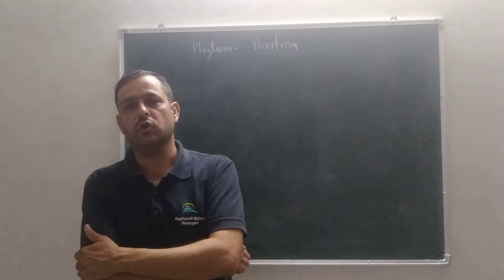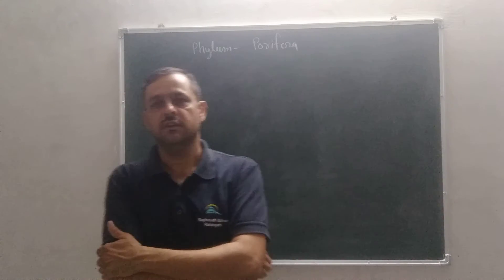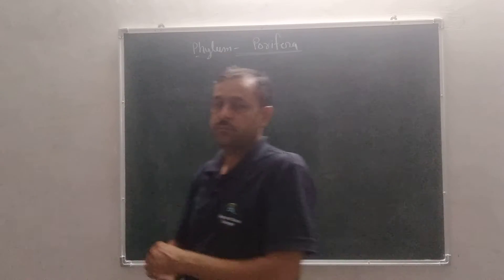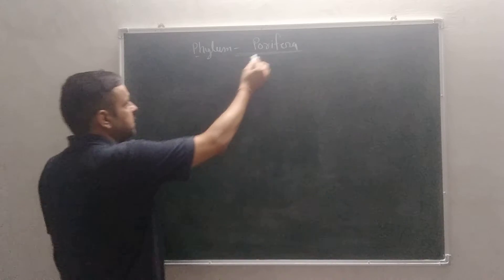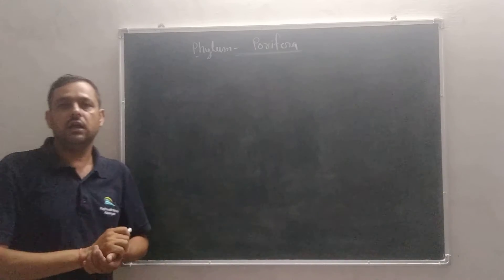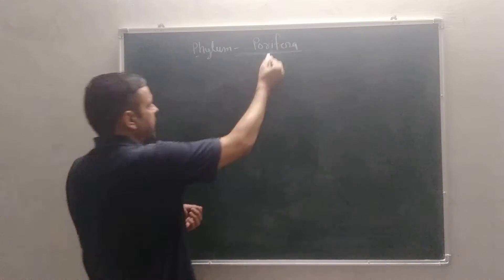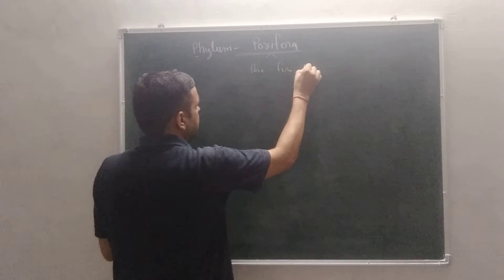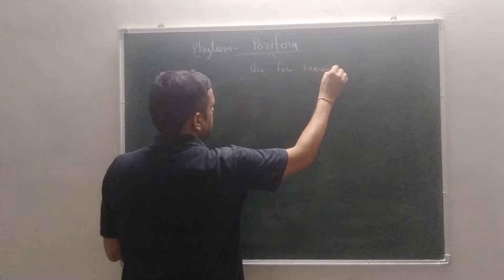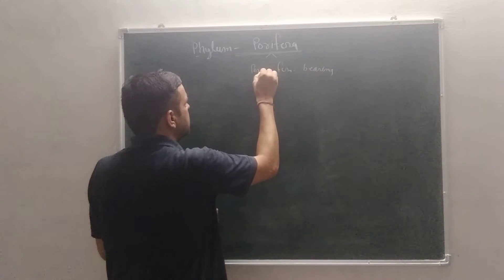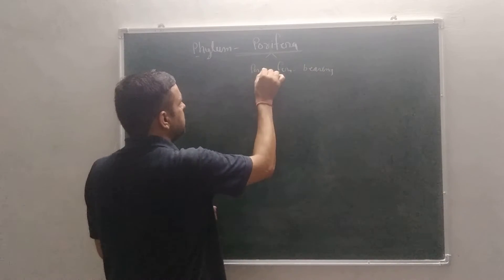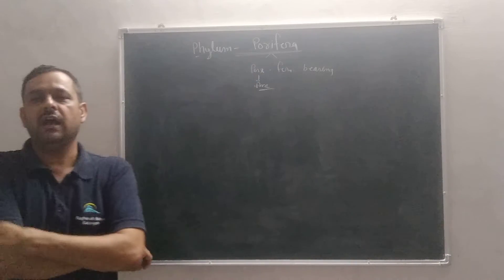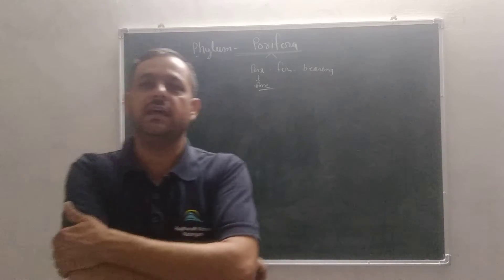Now, Non-Chordata are divided into nine phylum. The first phylum which we have studied today is Phylum Porifera. Porifera is a Greek word. When we want to understand this word, we can divide it into two parts: Por and Fera. Fera means bearing and pori means pore. Then, the Porifera are the pore bearing animals.